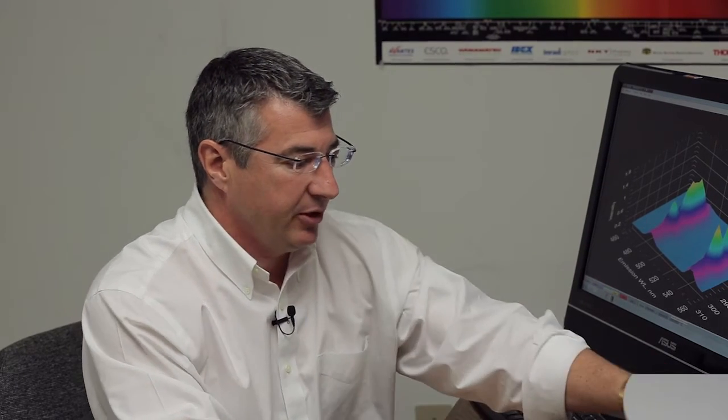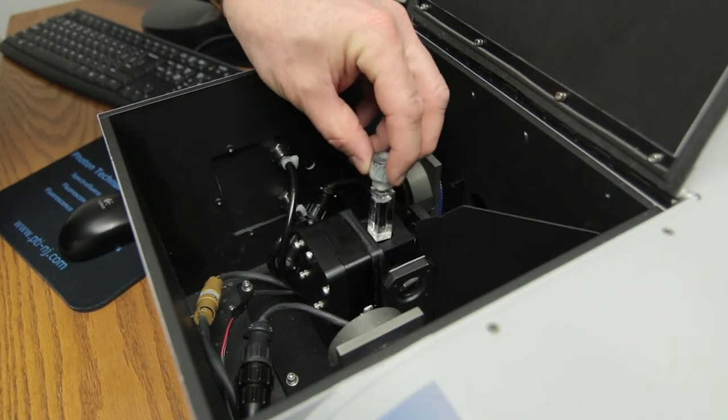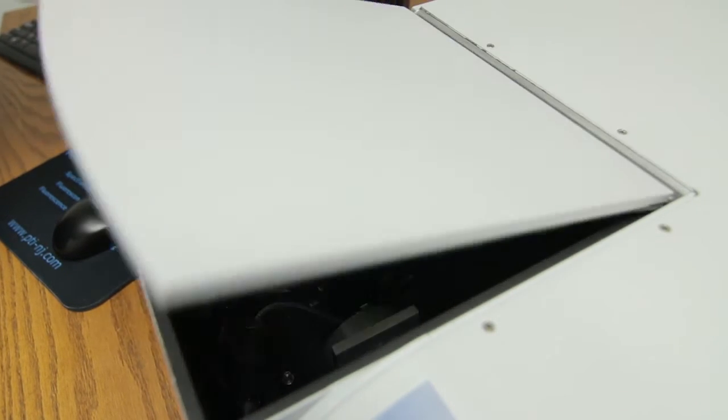So now we're going to actually run a couple of experiments, run a couple of spectra with a sample that we have here. This is a terbium. It's a very common rare earth. It's in solution in a cuvette and we're just going to put it in our cuvette holder inside the sample compartment and we're just going to set up and do an experiment.